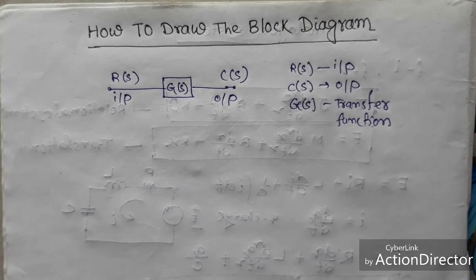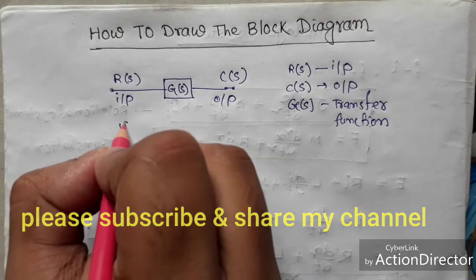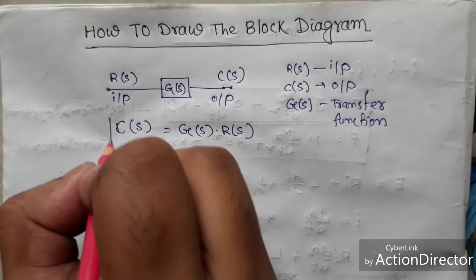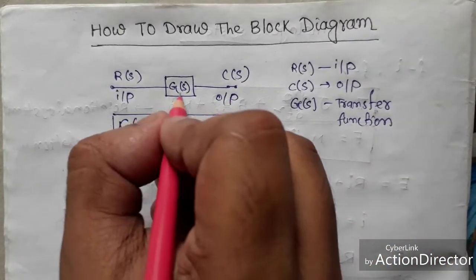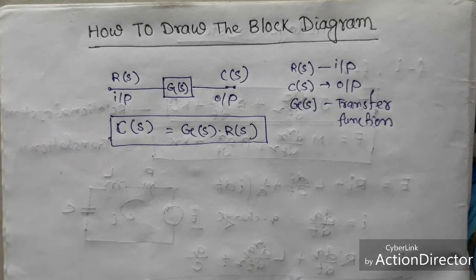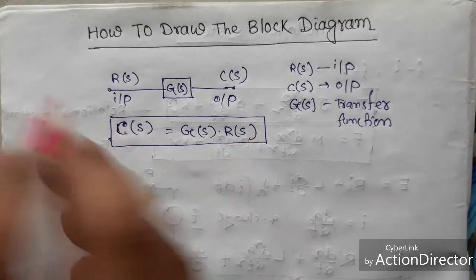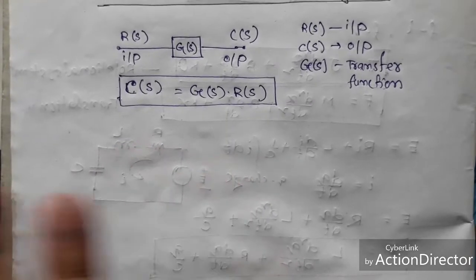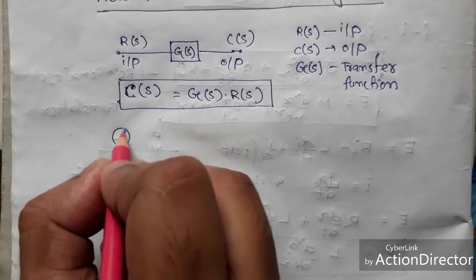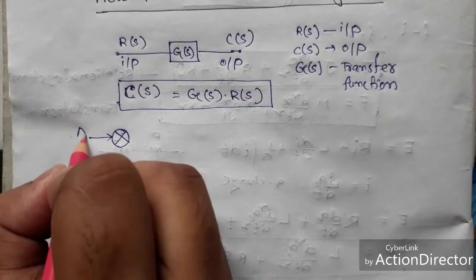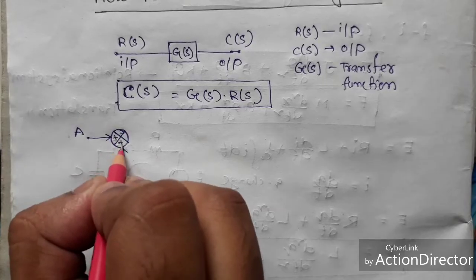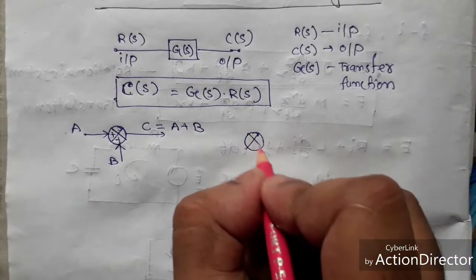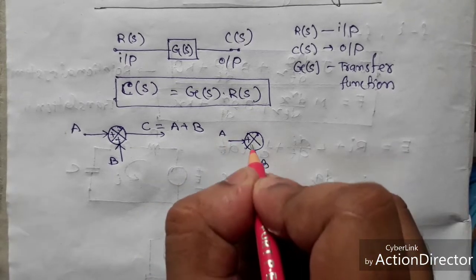From here we can easily write that output C(s) equals G(s) times R(s), which represents the transfer function. Now, the summing block: if there is one input A and one input B, both with plus signs, the output C equals A plus B. For another case, if one input is plus A and the other is minus B, then the output will be A minus B.